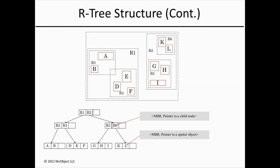To insert an object, the tree is traversed recursively from the root node. All the rectangles in the current internal node are examined. The constraint of least coverage is employed — in other words, the box that needs the least amount of enlargement to enclose the new object is selected. If more than one rectangle meets that criteria, the one with the smallest area is chosen. Inserting continues recursively in the chosen node. Once a leaf node is reached, a straightforward insertion is made if the leaf node is not full. If the leaf node is full, it has to be split before the insertion is made. There are a few splitting algorithms for good R-tree performance, but that's more detailed than we have time to cover in this presentation.